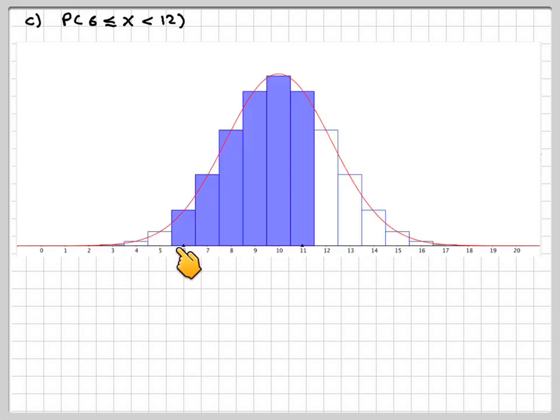The probability of X being between 6 and 12, more than or equal to 6 but less than 12. So 12 is not shaded. And obviously that one there is 5.5, and this one here is going to be 11.5. So this becomes, with the continuity correction, probability between 5.5, X is greater than 5.5 and less than 11.5. That's the answer to that one.